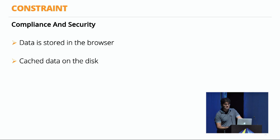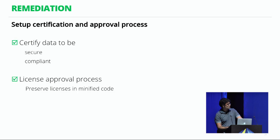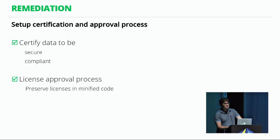The last constraint is compliance and security. With front-end JavaScript applications, some enterprise data now resides in the browser — in browser caches or on the user's disk. If this is not secure, it could result in regulatory violations for enterprises, bringing financial and reputational risk. Remediate this by setting up a certification and approval process right at the beginning — have competent people certify that data stored in the front-end is secure and compliant with enterprise policies. Also put in a license approval process to make sure the enterprise is safe from the software being used. We often minify JavaScript code, but there are options to include licenses and not have them removed.